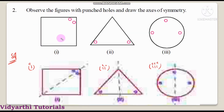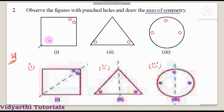Question number 2: observe the figures with punctured holes and draw the axis of symmetry. The axis of symmetry and line of symmetry mean the same. Here are the puncher holes figures. There are two holes and we need to identify the line of symmetry. This will be the line of symmetry.